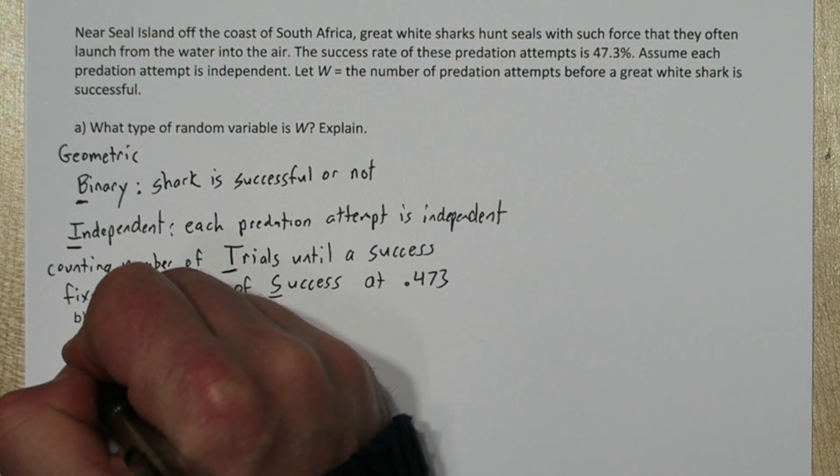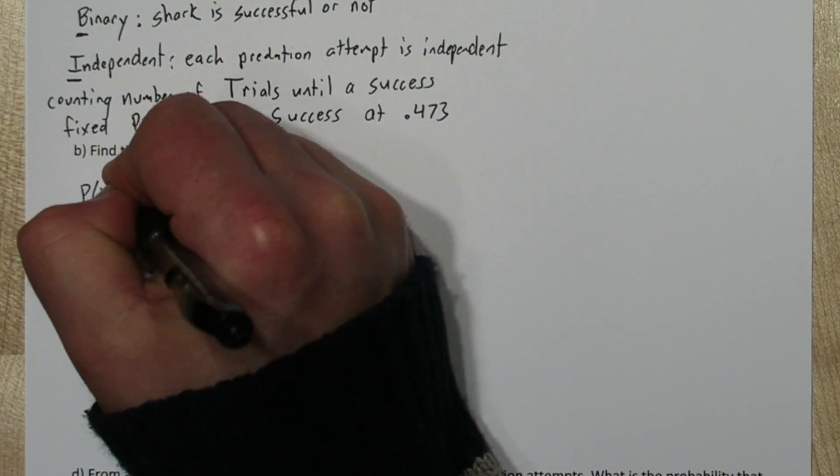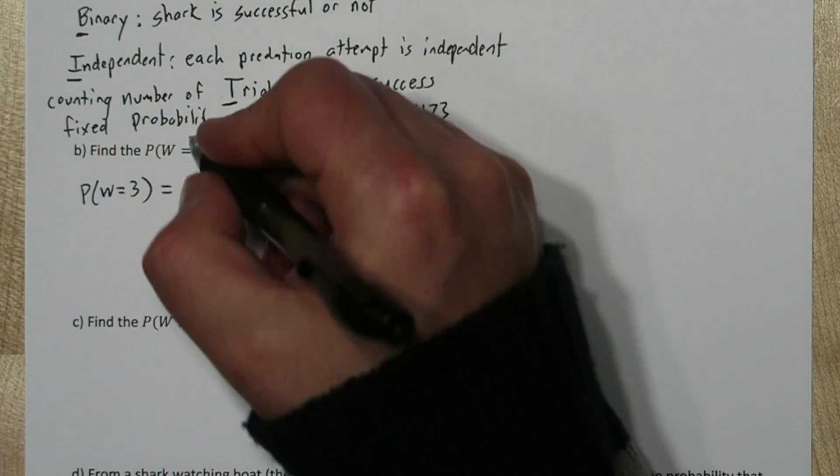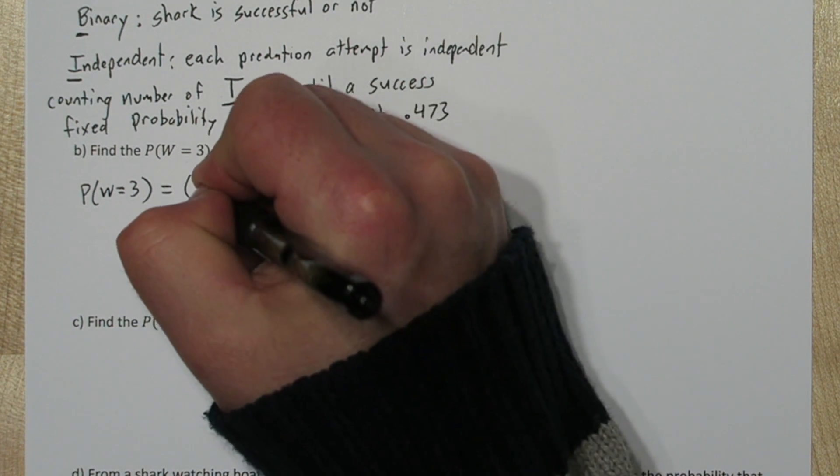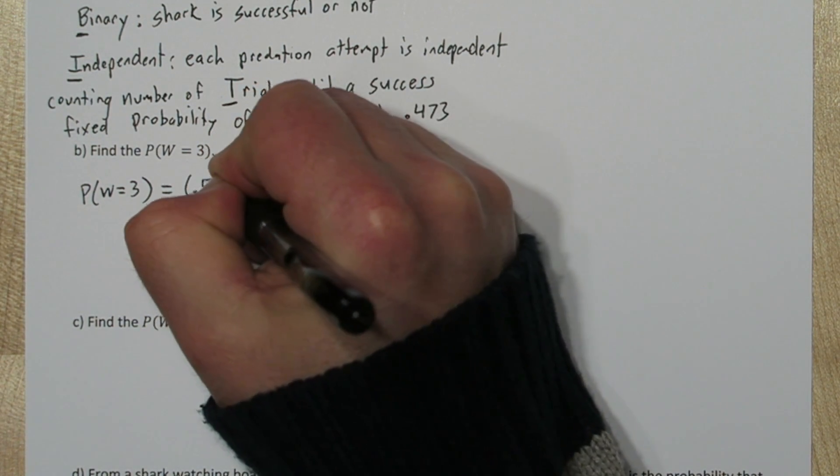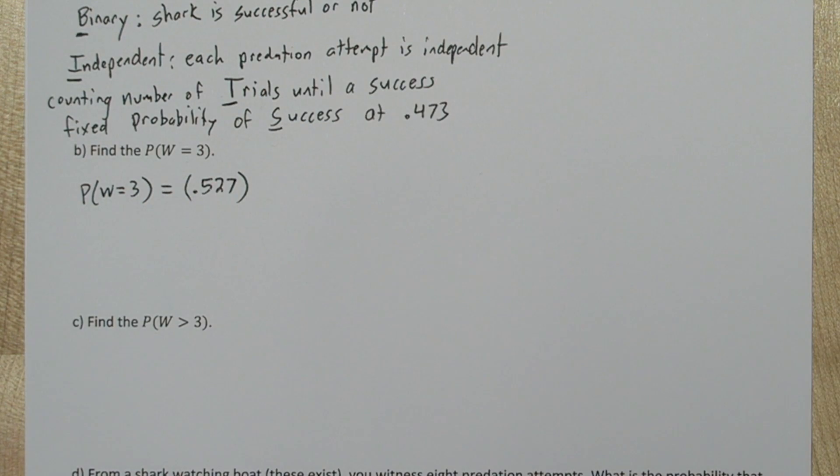Now, for the first success to occur on the third attempt, we have to have a failure for the first attempt. So the probability of a failure is .527, which is 1 minus the probability of success.